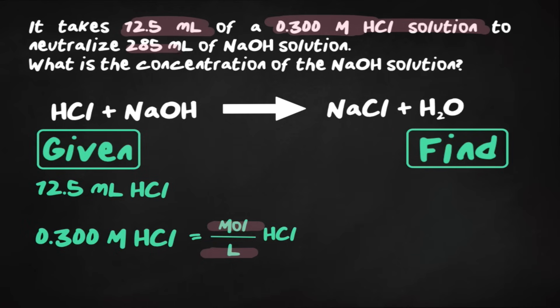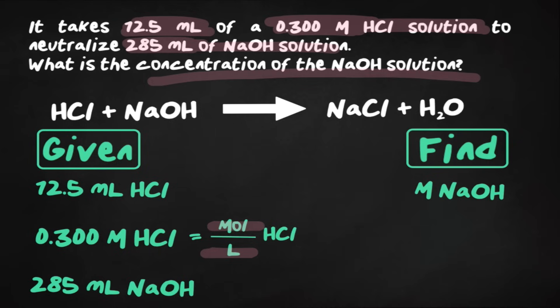We're also given 285 milliliters of NaOH solution. Now we're finding the concentration of NaOH solution, or really molarity. And once again, molarity is moles over liters. So we first have to find the moles of NaOH, and then we'll divide that by the liters of NaOH.